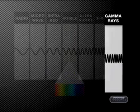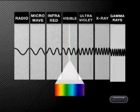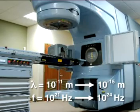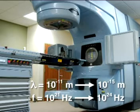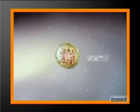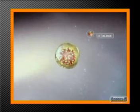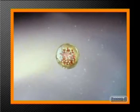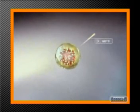Finally, there are gamma rays. Their wavelengths are between 10 to the minus 11 meters and 10 to the minus 15 meters, with a frequency range from 10 to the 21 hertz to 10 to the 24 hertz. Gamma rays are produced by radioactive elements and are used to kill cancer cells, sterilize equipment, and to increase the shelf life of food.